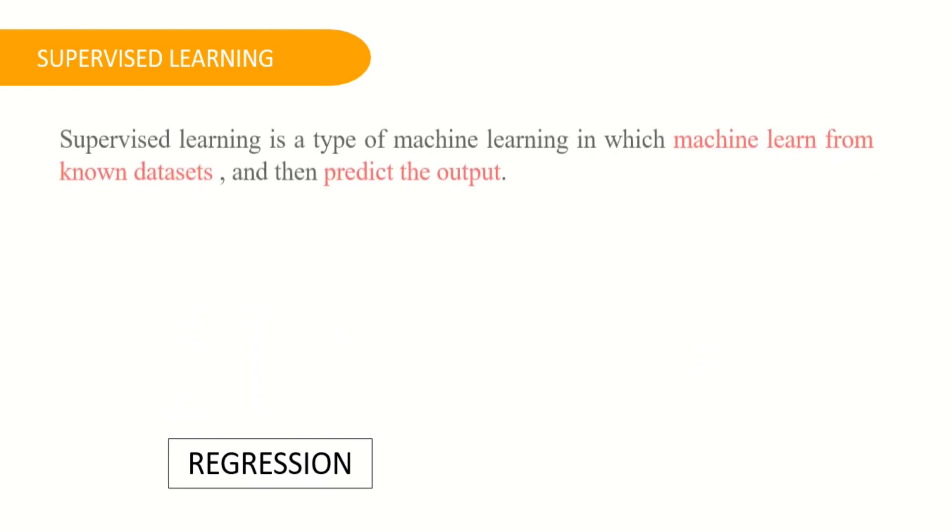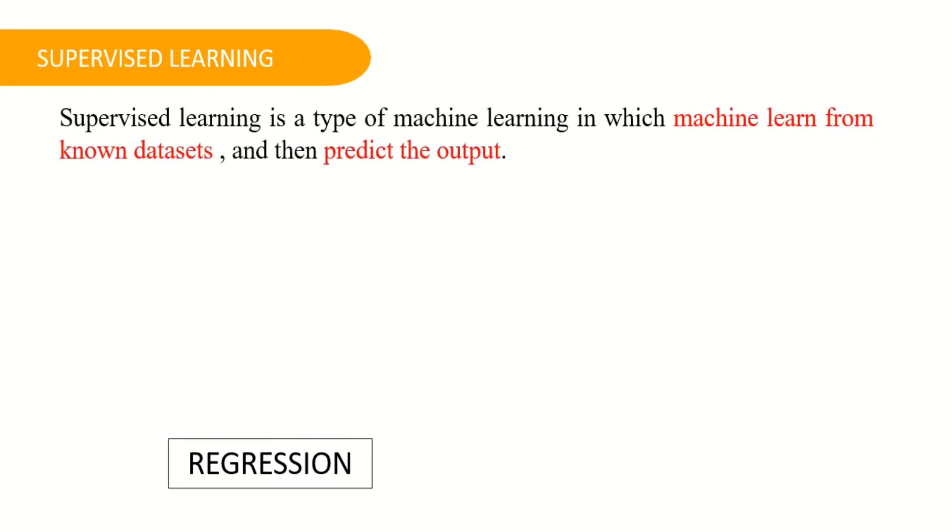Now, let's understand what is this supervised learning? Supervised learning is a type of machine learning in which machines learn from known data sets and then predict the output. So we are dealing with the known data sets and then we predict the output. So it comes under supervised learning.